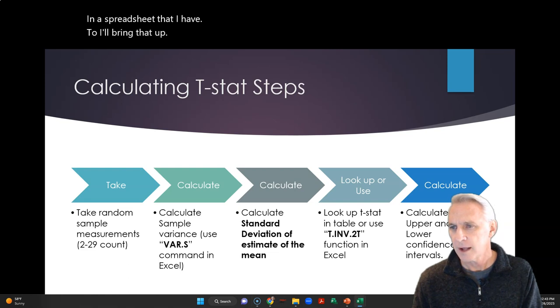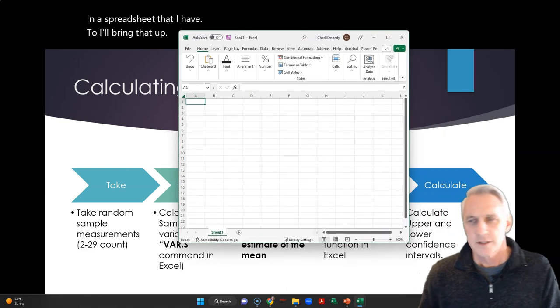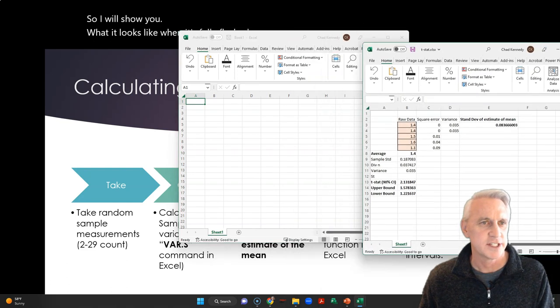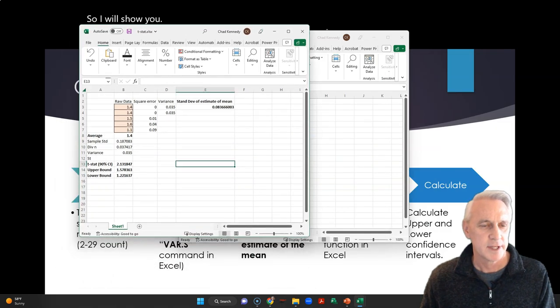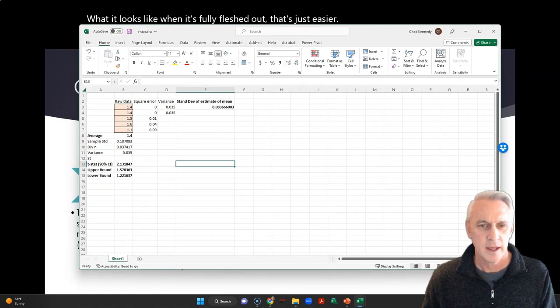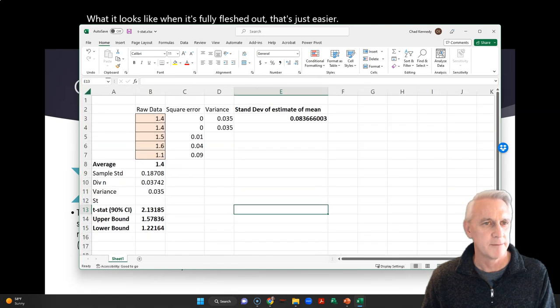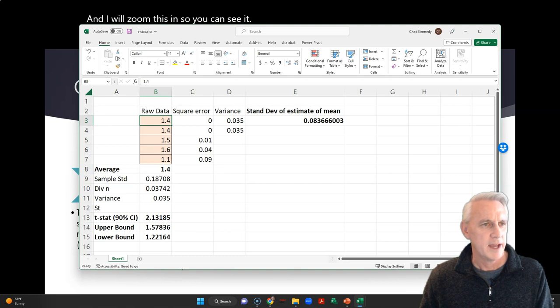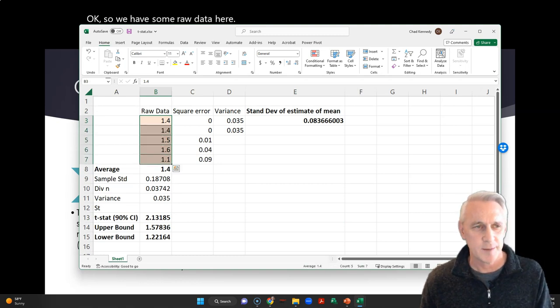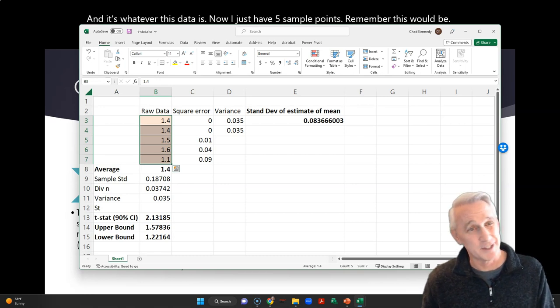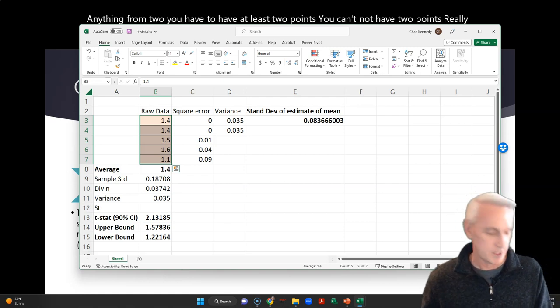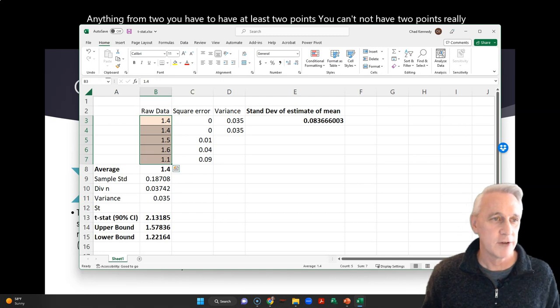So I will bring that up. So actually, I will show you what it looks like when it's fully flushed out. That's just easier. That bigger. And I will zoom this in so you can see it. Okay, so we have some raw data here. And it's whatever this data is. Now I just have five sample points. Remember, this would be anything from two, you have to have at least two points. You can't not have two points. Really, it's probably between five and 29 points. So this is our raw data that we measured.